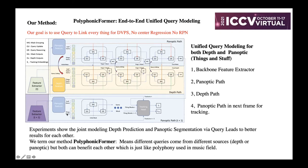Experiments show that joint modeling with depth prediction and panoptic segmentation using queries leads to better results for each other. We term our method PolyFormer, meaning that different queries come from different sources. As shown in this figure, the different queries come from panoptic segmentation and depth prediction, and both can benefit each other — just like a polyphony in music.